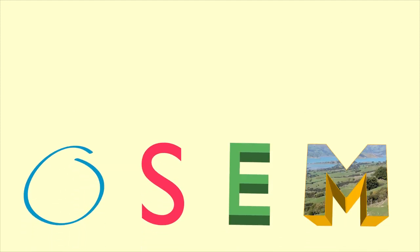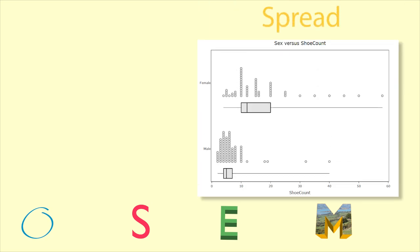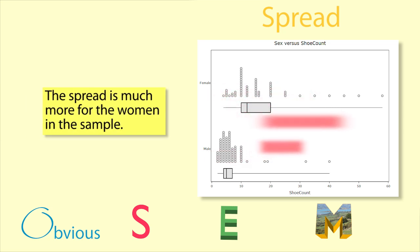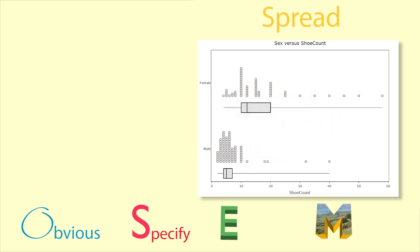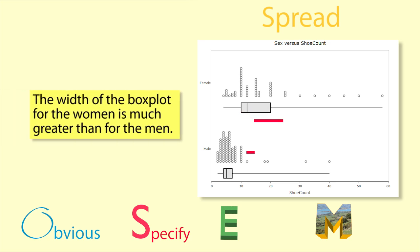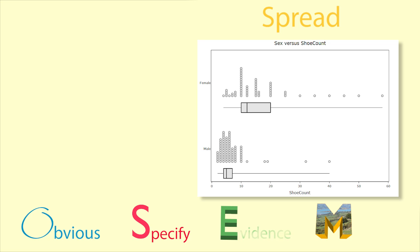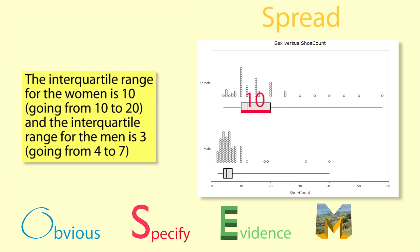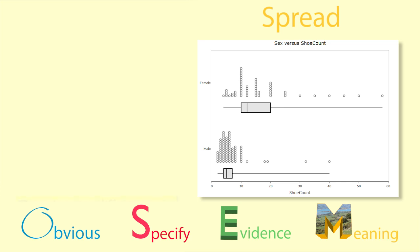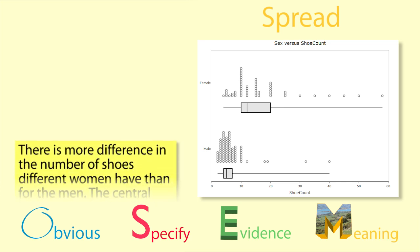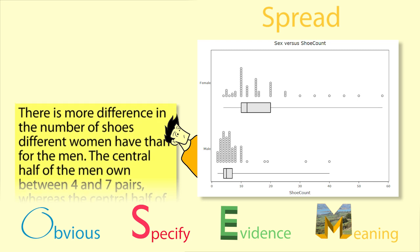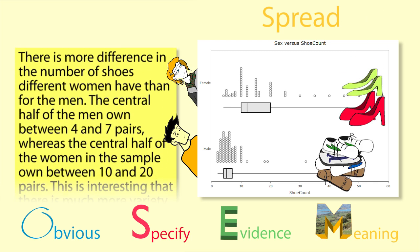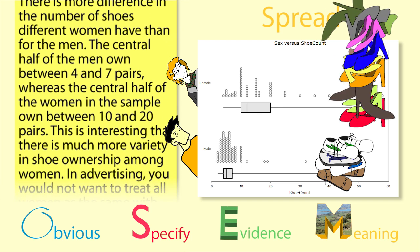Now we will use OSIM to analyse and report on the spread of the data in the two groups. Obvious — the spread is much more for the women in the sample. Specify — the width of the box plot for the women is much greater than for the men. Evidence — the interquartile range for the women is 10, going from 10 to 20, and the interquartile range for the men is 3, going from 4 to 7. Meaning — there is more difference in the number of shoes different women have than for men. The central half of the men owned between 4 and 7 pairs, whereas the central half of the women in the sample owned between 10 and 20 pairs.